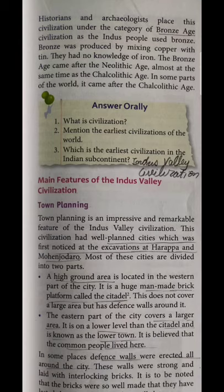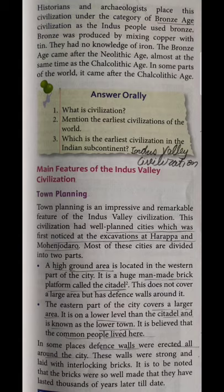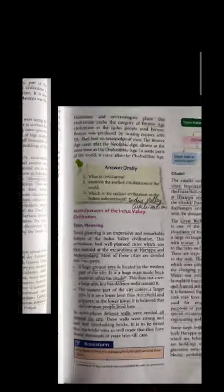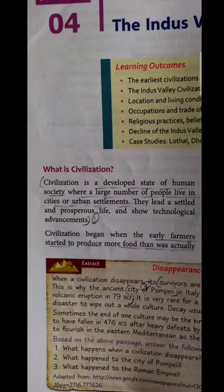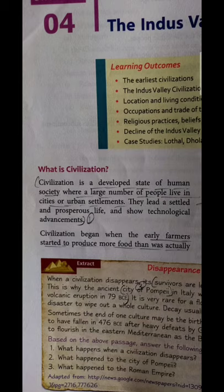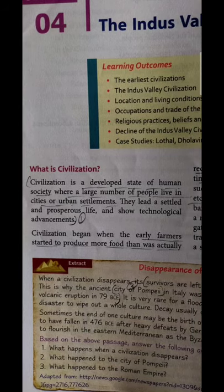Some questions are given here to answer orally. The first question is: what is civilization? We already know what civilization is. The answer: civilization is a developed stage of human society where a large number of people live in cities or urban settlements. They led a settled and prosperous life — a quality life, a very good and relaxing life — and showed technological advancement.